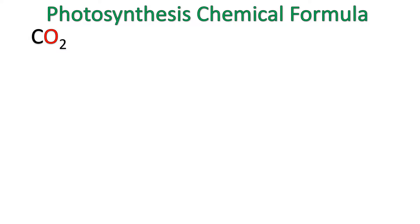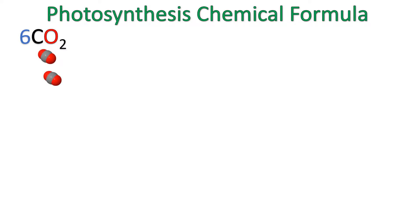Let's first look at the CO₂. It's asking you for a molecule. This molecule has two red objects, which is oxygen, and one carbon. And it wants six of them — so we count out one, two, three, four, five, six molecules.